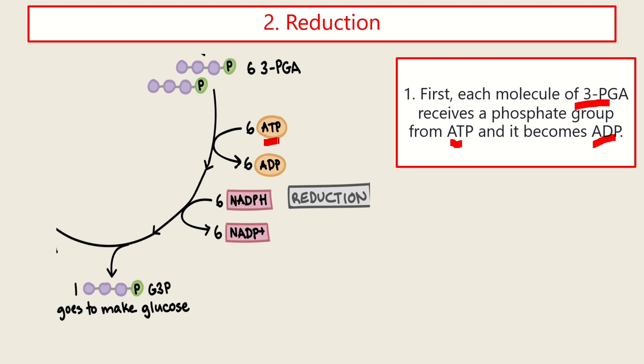And by releasing the energy, the phosphate is lost. And it will become ADP. Then this ADP will go back to the light reaction.